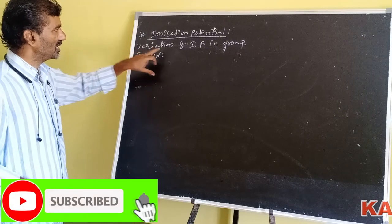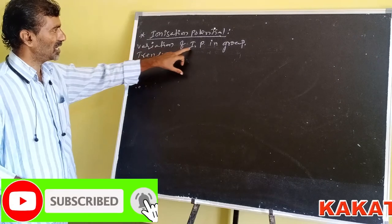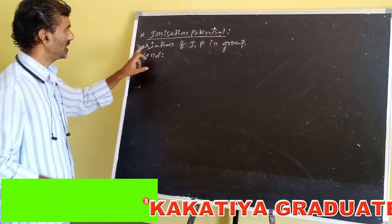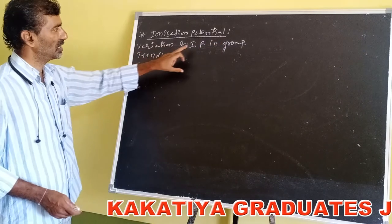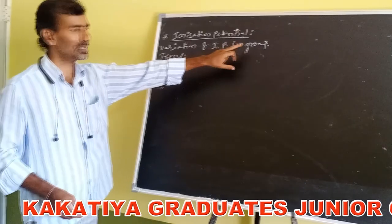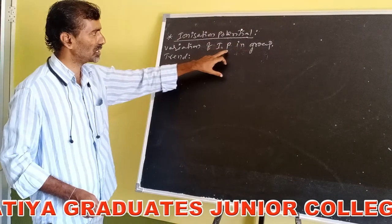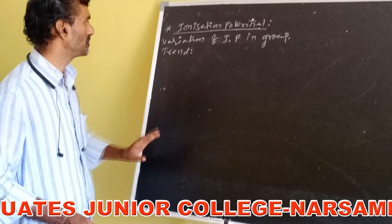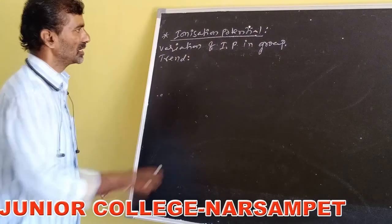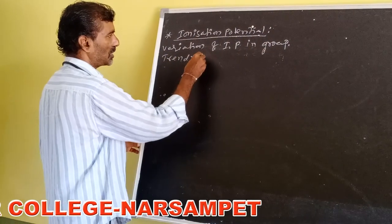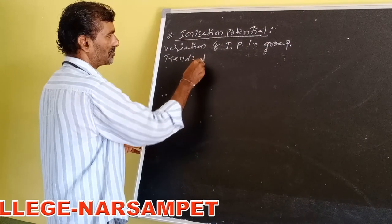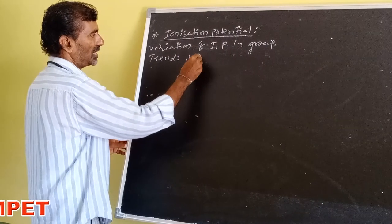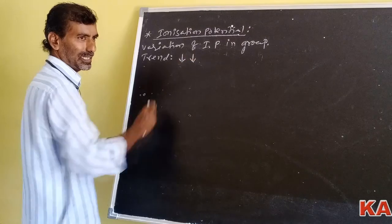Variation of ionization potential values in the group. Trend: in the group from top to bottom, ionization potential values decrease.